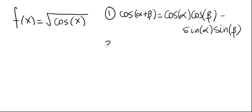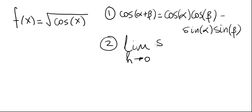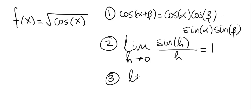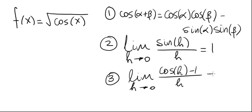The second thing we'll need is the limit as h goes to zero of sine of h over h is one. And the third result is that the limit as h approaches zero of cosine of h minus one over h is equal to zero.